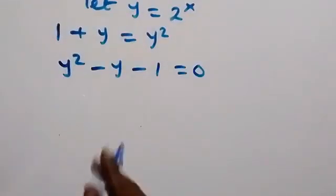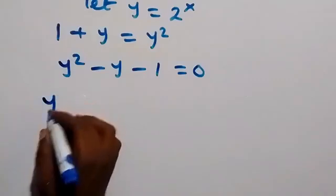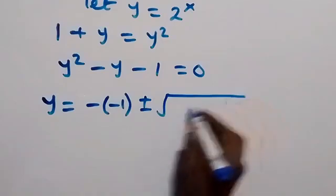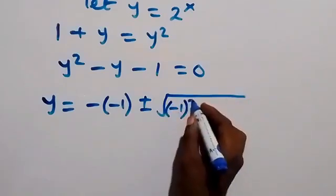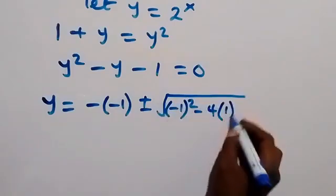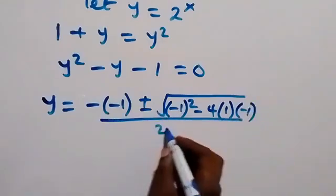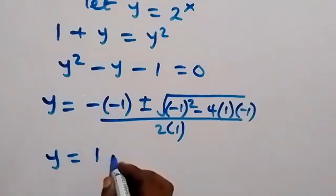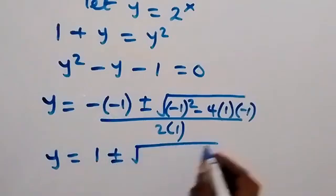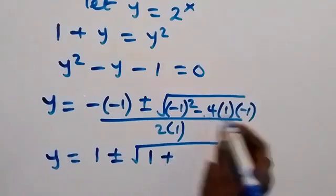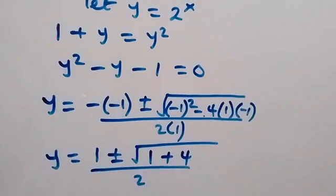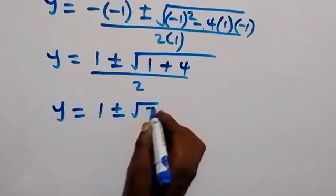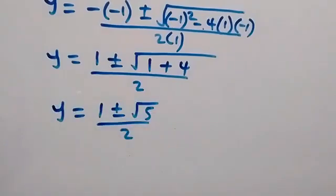We can solve this quadratic equation using the quadratic formula. We have y equals to minus b — that's minus of negative 1 — plus or minus square root of b squared, that's negative 1 squared, minus 4ac, where a is 1 and c is negative 1, over 2 times 1. From here we have y equals to 1 plus or minus square root of 1 plus 4, all over 2. This gives us y equals to 1 plus or minus square root of 5, over 2.